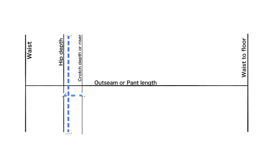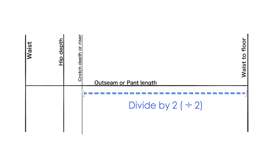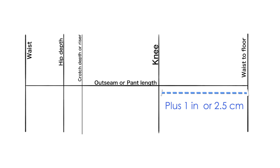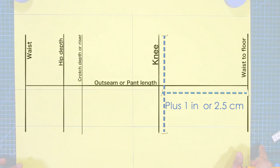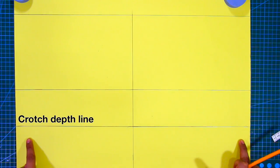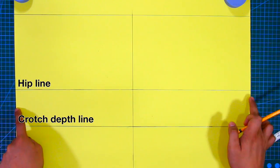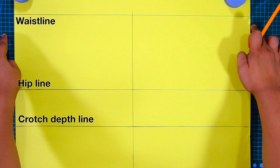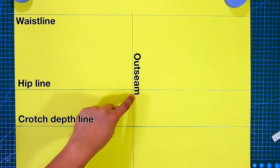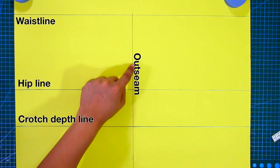For the knee length, get the measurement from the crotch depth to the floor length and divide it by two. Mark up this measurement from the floor length and add one inch (2.5 centimeters), then square out a horizontal line. So now we have the crotch depth line, hip line, waistline, knee line, and the middle outseam or trouser length line.